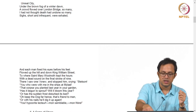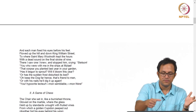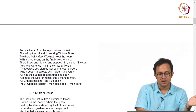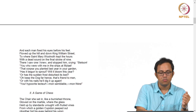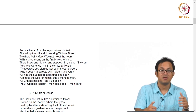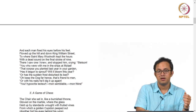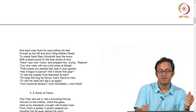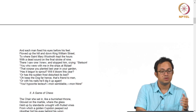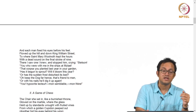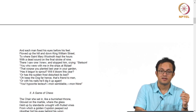I stop at this point today. We end up with the first section, and in the next section we move on to the game of chess, which has lots of Spencerian references to the Faerie Queene and Edmund Spenser, which we will unpack in some detail in the next lecture. Thank you for your attention.